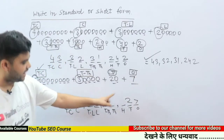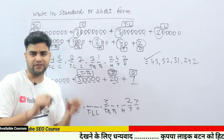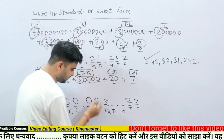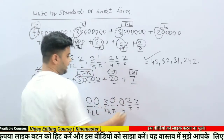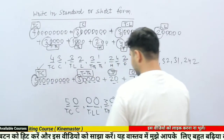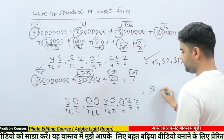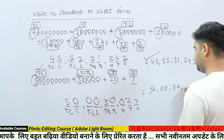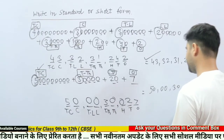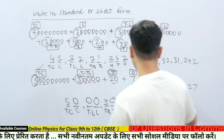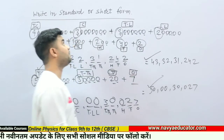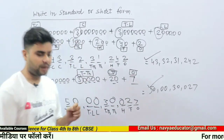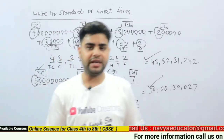In the tens place I will write 2, and in the ones place I will write 7. For the blank places, you will have to fill in zeros. So the number is: 5, 0, 0, 3, 0, 0, 0, 2, 7 — that is fifty crore thirty thousand two hundred and twenty-seven. This is the short form or standard form of the given expanded form.